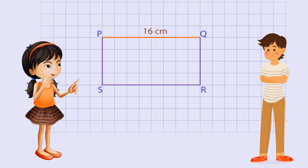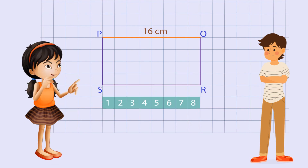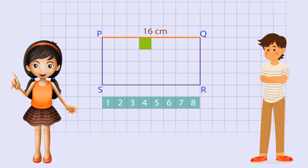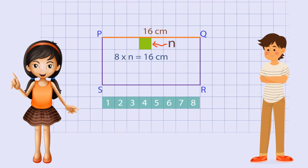It's very easy. First, we count the number of squares along the length. There are 8 of them. So, if the side length of small squares is N, then we can say 8 into N equals 16 cm. So, N equals 16 by 8 cm, equals 2 cm.